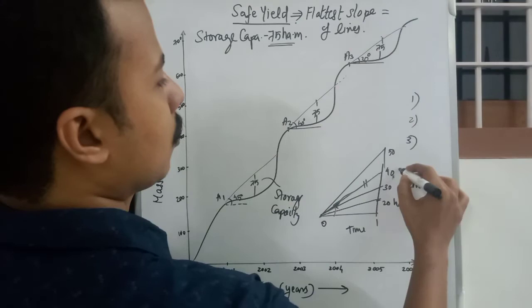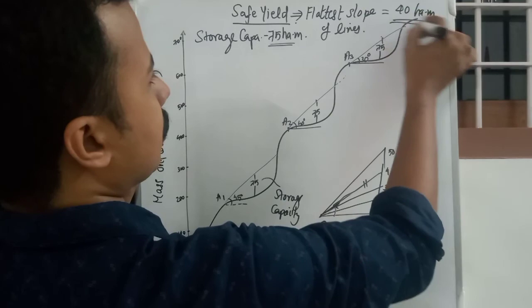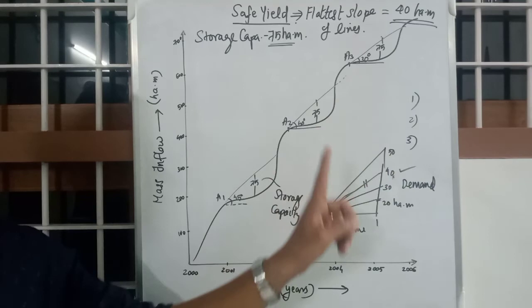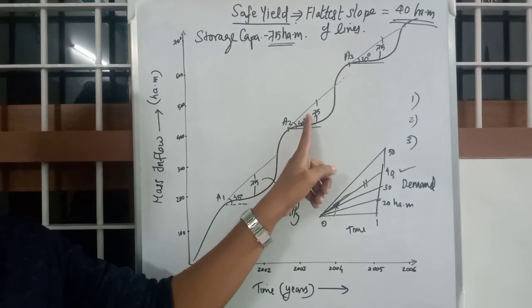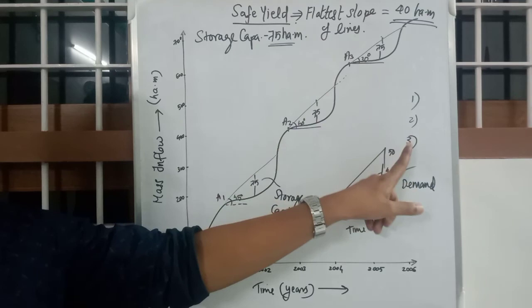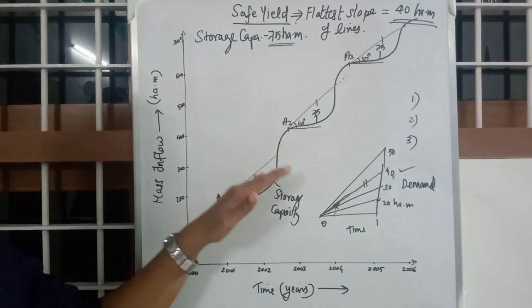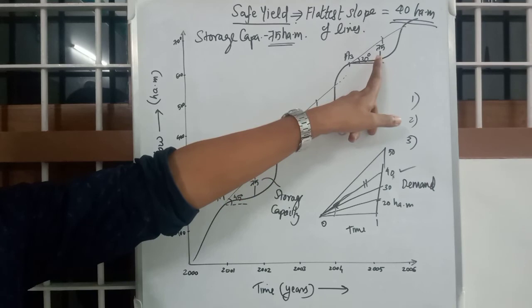Suppose the 30-degree line corresponds to 40 hectare meters on the demand axis. So our safe yield is 40 hectare meters. To recap: step one — gather the mass inflow curve and demand curve. Step two — draw straight lines so that the maximum vertical intercepts equal the previously obtained storage capacity. Step three — the safe yield equals the slope of the flattest of those lines.